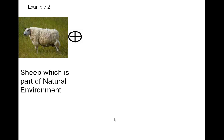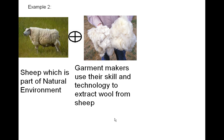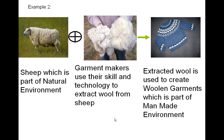Example two: sheep, which are part of natural environment — garment makers use their skill and technology to extract wool from sheep, and this extracted wool is used to create woolen garments, which are part of man-made environment.